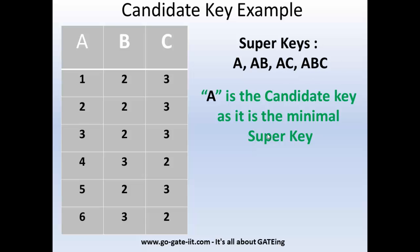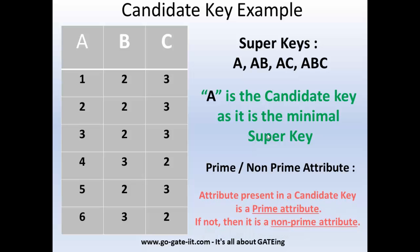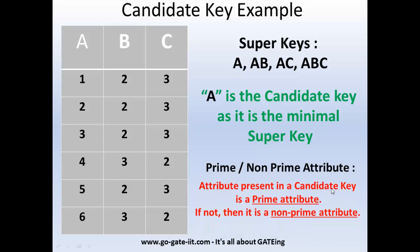I hope this clears the concept of candidate key. Now there are two more related terminologies: prime and non-prime attributes. The attributes which are present in a candidate key are prime attributes — so A is the prime attribute here. The attributes which are not present in the candidate key are non-prime attributes. So A is the prime attribute and B and C are non-prime attributes. Prime and non-prime attributes are of utmost importance in normalization and types of functional dependencies.